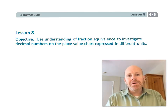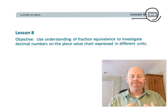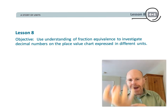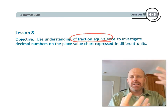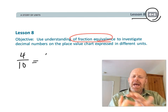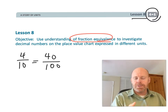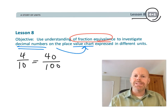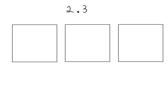This is fourth grade module 6 lesson 8. In this lesson, students are going to be understanding how to take fraction equivalence — like four tenths is equal to 40 hundredths — and move that into the world of decimals. We're also going to be connecting that with the place value chart. Let's get started.